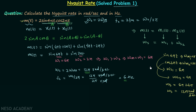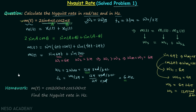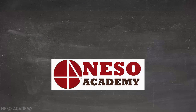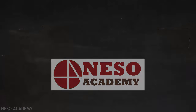Now for the homework problem: the message signal is m(t) = cos(200πt)·cos(100πt). Calculate the Nyquist rate in hertz. Try to solve it on your own and post your answer in the comment section.